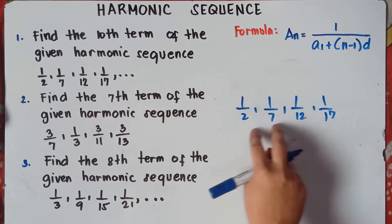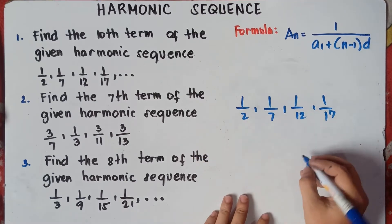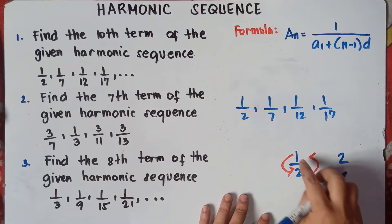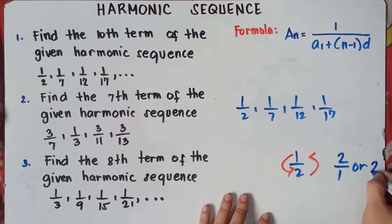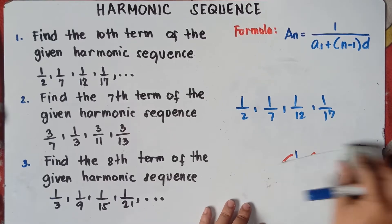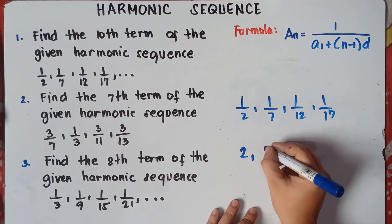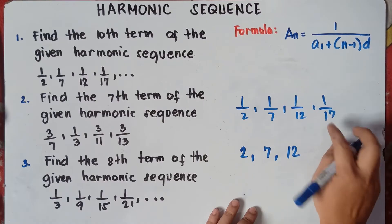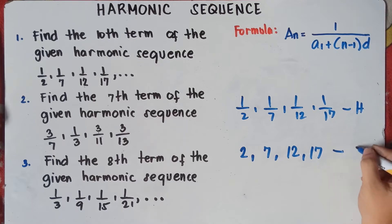So we convert this one into arithmetic sequence — get the reciprocal. For 1 half, get the reciprocal: 2 will be on the numerator and 1 will be the denominator, so 2 over 1 or 2. The reciprocal of 1 half is 2. The reciprocal of 1 over 7 is 7. The reciprocal of 1 over 12 is 12. The reciprocal of 1 over 17 is 17. This is the harmonic sequence, and this will be the arithmetic sequence.